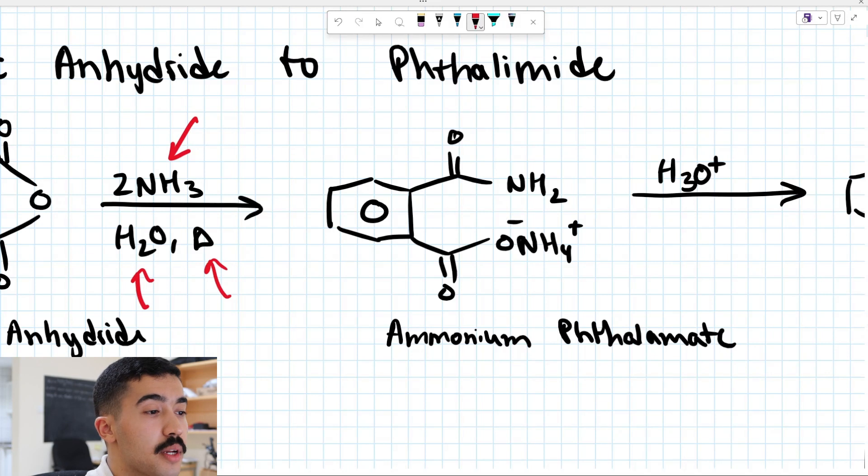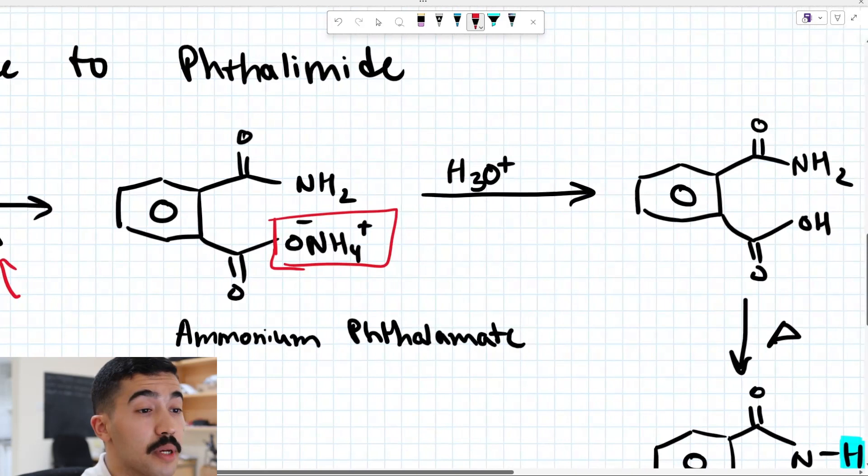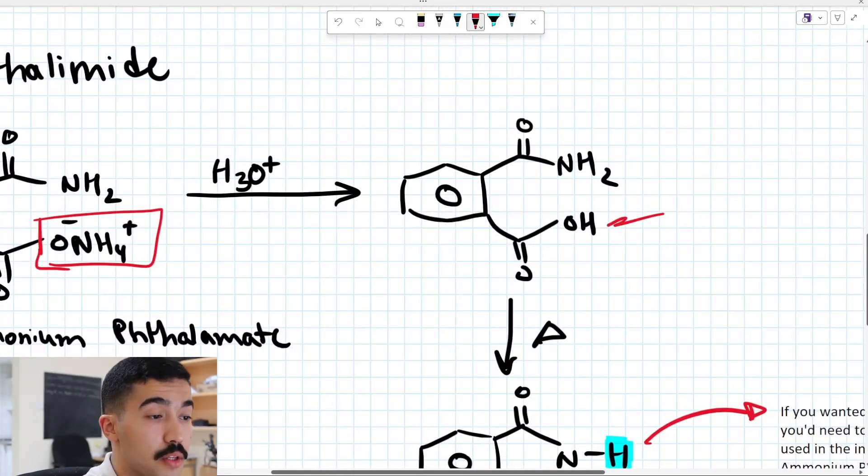Now the next step is we want to get rid of this O minus NH4 plus over here. In order to do that, we're going to add H3O plus. When we add H3O plus, we form basically a carboxylic acid on this end, but we keep our amide over here.